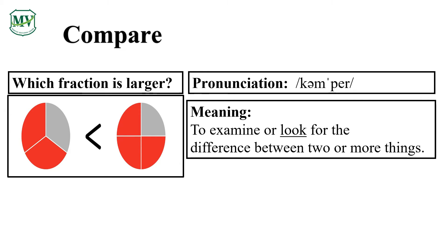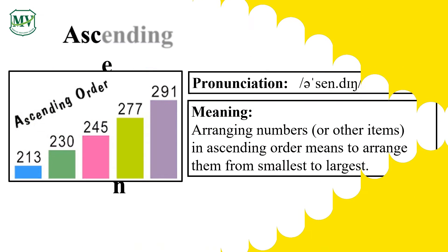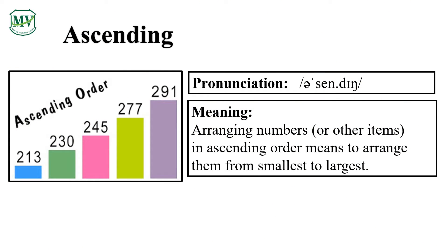Please repeat the word after me: ascending. Very good! Arranging numbers or other items in ascending order means to arrange them from smallest to largest.